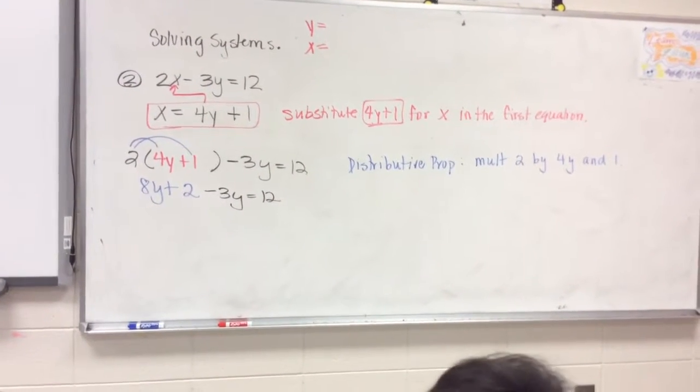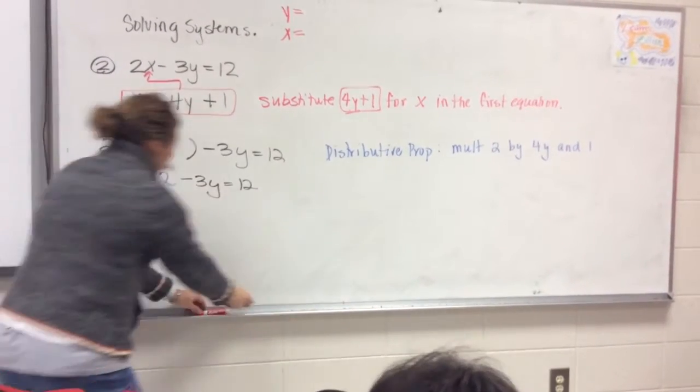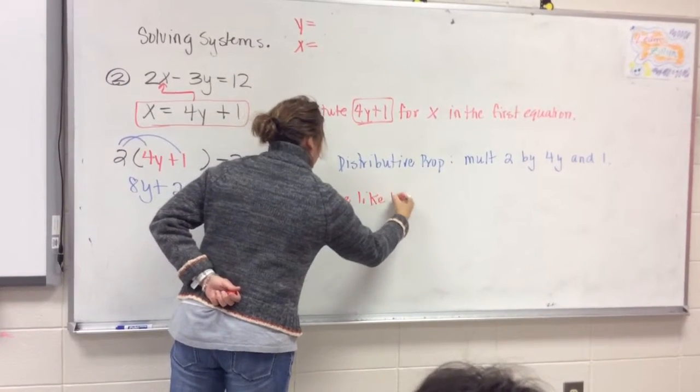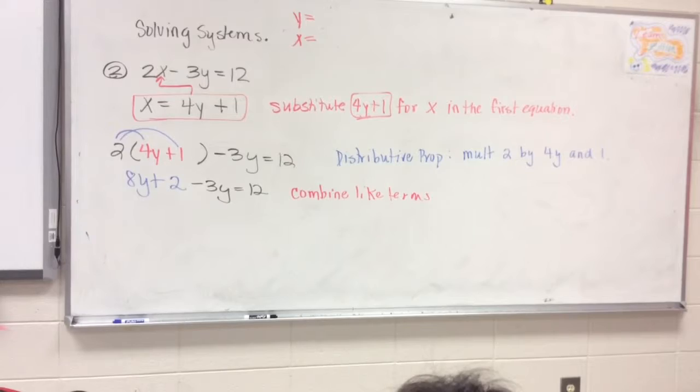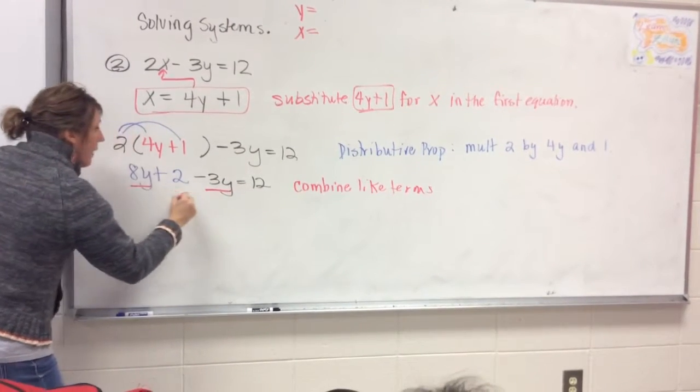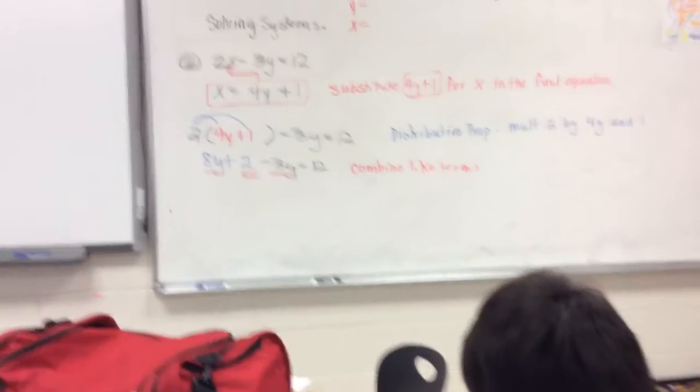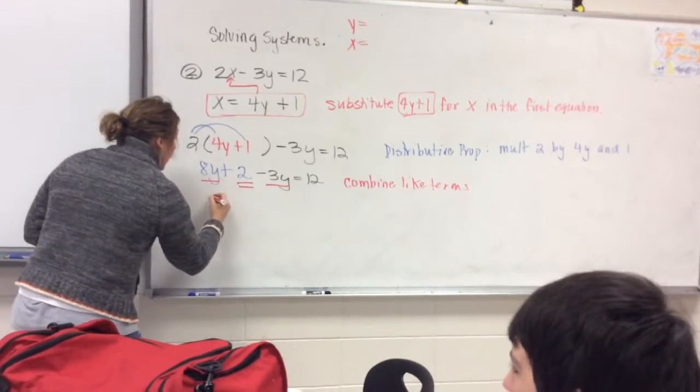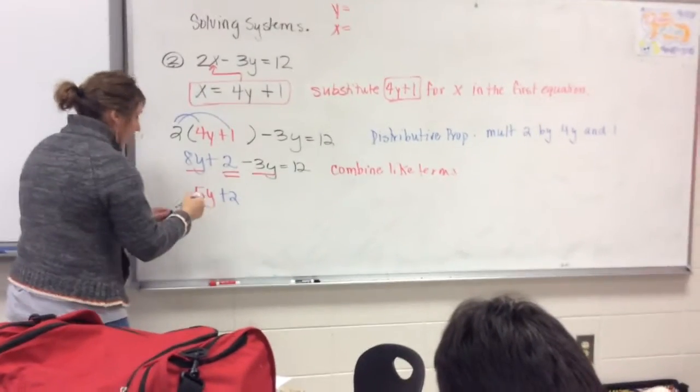Now, from this point, what do you have to do from here? Combine like terms. So I'm going to put combine like terms. So what are my like terms? Okay. So 8y and negative 3y. And then we know that 2 is not like 8y and negative 3y. So 8y and a negative 3y gives you what? It gives you 5y. And then I'm just bringing down the plus 2 and then equals 12.